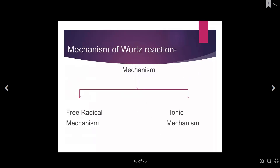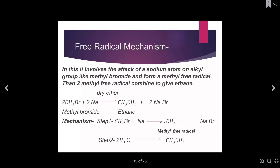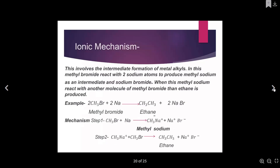These are the mechanisms of the Wurtz reaction. There are two mechanisms: free radical mechanism and ionic mechanism. In the free radical mechanism, there is an attack of a sodium atom on an alkyl group like methyl bromide to form a methyl free radical. Then two methyl free radicals combine to give ethane. Step one: methyl bromide in the presence of sodium generates methyl free radicals. In step two, another methyl free radical is generated, and these two methyl radicals react together to produce ethane.